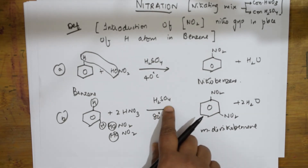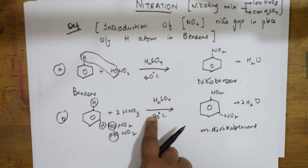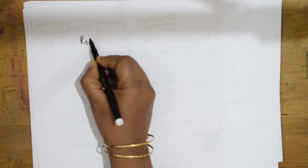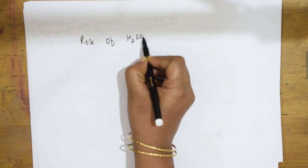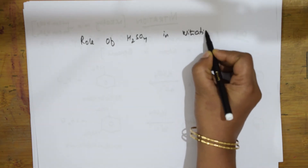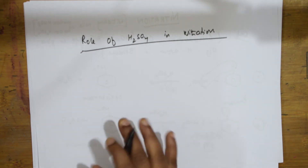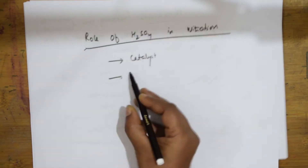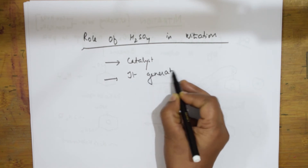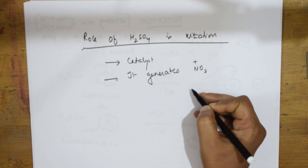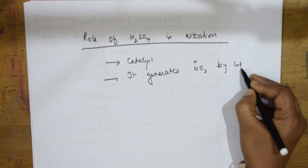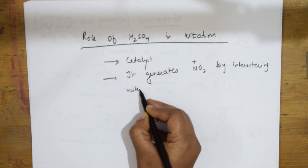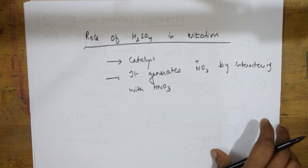Even if sulfuric acid is not there, nitration takes place, but you require a very high temperature. So sulfuric acid here acts as a catalyst - that is the role of H₂SO₄ in nitration. Sulfuric acid acts as a catalyst and speeds up the reaction. It also generates NO₂⁺, the electrophile, by interacting with HNO₃. I will be showing you the mechanism in a few seconds so you can understand. This is the role of H₂SO₄.